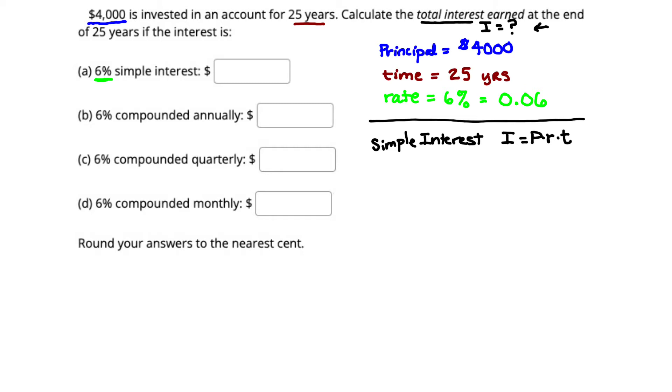We have P, we have R, and we have T. So this first part, A, is very simple. Our P-value is 4,000, our R-value is 0.06, and our T-value is 25. We're going to pull out our calculator and evaluate our interest. So we have 4,000 times 0.06 times 25. And when we put all that together, that tells us that our interest is $6,000. So if we invest $4,000 at 6% for 25 years, our interest, or the amount of interest earned, is 6,000.